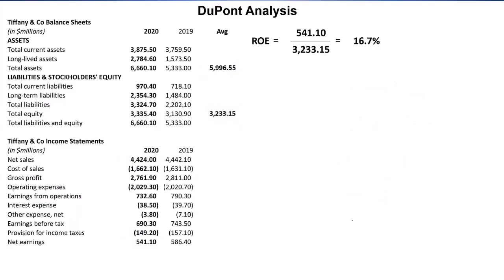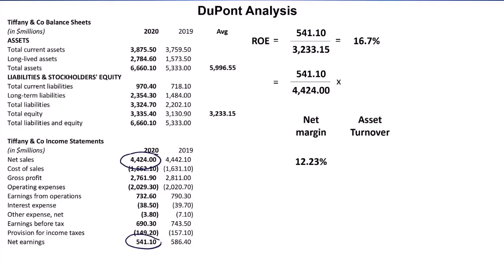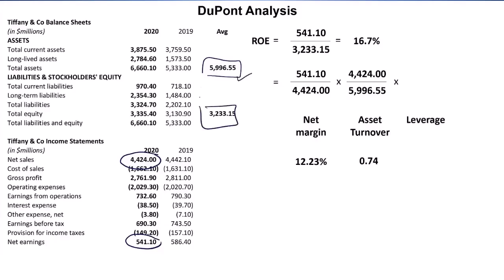Now let's do it for Tiffany. ROE is 16.7%. Starting with net margin: this year's net earnings divided by this year's revenue gives a net margin of 12.23%. Asset turnover: average total assets and the same revenue figure give 0.74. And finally, leverage: average assets divided by average equity gives 1.85. Multiply those three together and you've got Tiffany's 16.7% ROE.